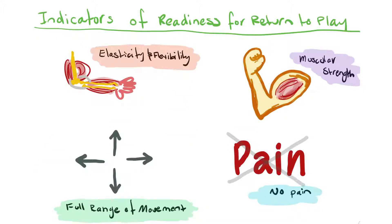The first indicator of readiness for return to play is elasticity and flexibility — relating to muscles and joints, including the ligaments surrounding the joints. If an athlete's muscles and joints are elastic and flexible and can be moved comfortably, that's usually a good indicator they could be ready to return. The next aspect is muscular strength — a good way to test this is with isometric weights. If the athlete can demonstrate their muscular strength is at a level sufficient for play, that's also a good indicator they're ready to return.